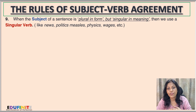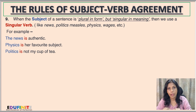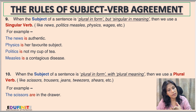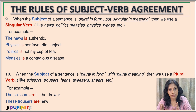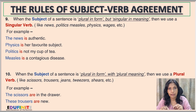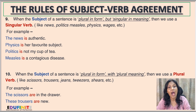Rule number nine: when the subject of a sentence is plural in form but singular in meaning, we use a singular verb. Examples include: news, politics, measles, physics, wages. 'The news is authentic' — though 'news' ends in 's', it is not plural; it is singular, so we use 'is'. 'Physics is her favorite subject' — physics ends in 's' but is singular, so we say 'physics is', not 'physics are'. 'Politics is not my cup of tea' — same reasoning applies.